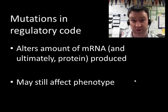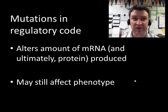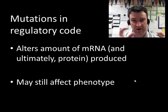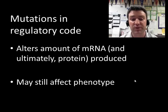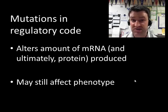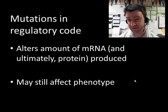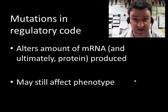Mutations can also occur in the regulatory regions of genes — for example, the promoter region. Since those regulatory regions control how often RNA polymerase comes to transcribe the gene in the first place, the effect will be to alter how much mRNA is created and therefore how much protein is created. This could affect phenotype depending on whether making more or less of that protein causes some kind of effect.